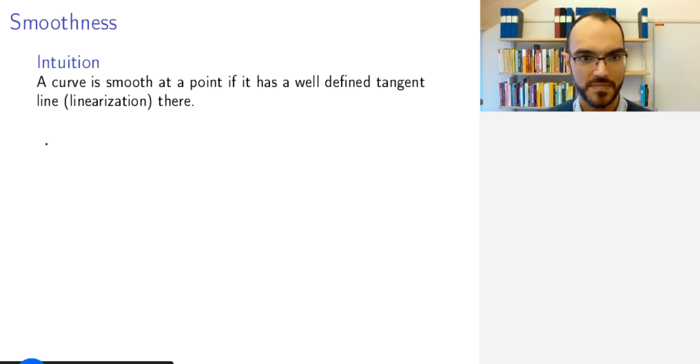For example, this curve at this point is smooth because we have a well-defined tangent line. These are pictures for the intuition, but for this curve at this point, it's not clear how to draw a line tangent to the curve, so we would expect this curve not to be smooth at that point.